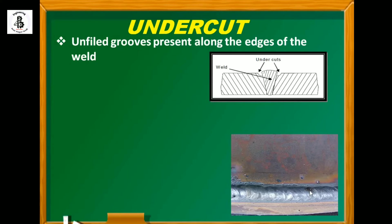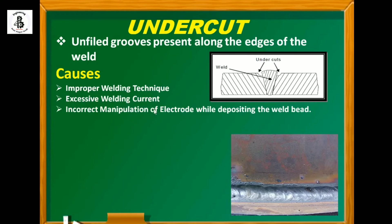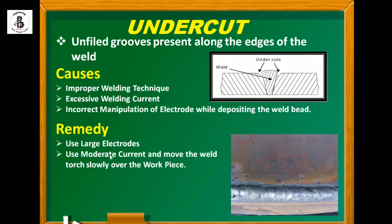The causes of undercut are improper welding techniques, excessive welding currents, and incorrect manipulation of the electrode while depositing the weld bead. The remedies for undercut include using large electrodes, using moderate current, moving the weld slowly over the workpiece material, and placing the electrode at a safe distance from the interface.